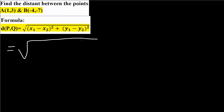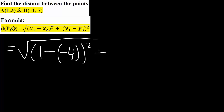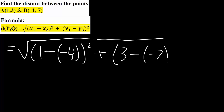We can say the distance will be the square root. Our x1 is 1, minus parenthesis x2 — x2 is negative 4 — so minus 4, close parenthesis, squared. Plus parenthesis y1 — y1 we said was 3 — minus parenthesis negative 7, so minus 7, squared. So we follow this formula right here.